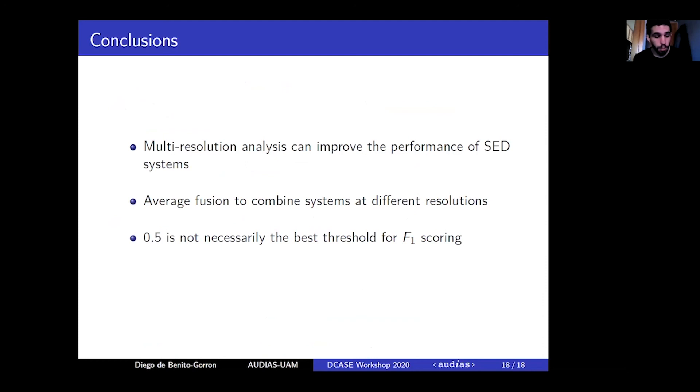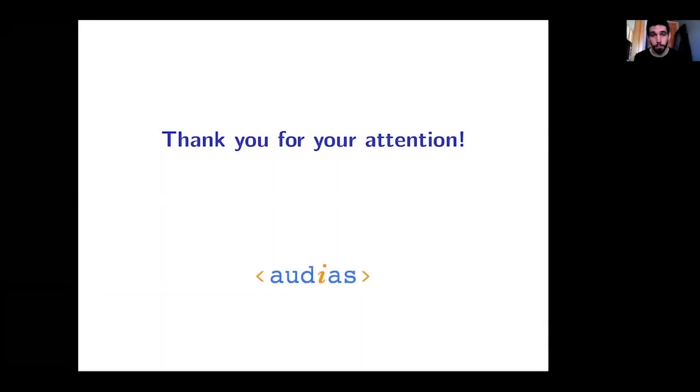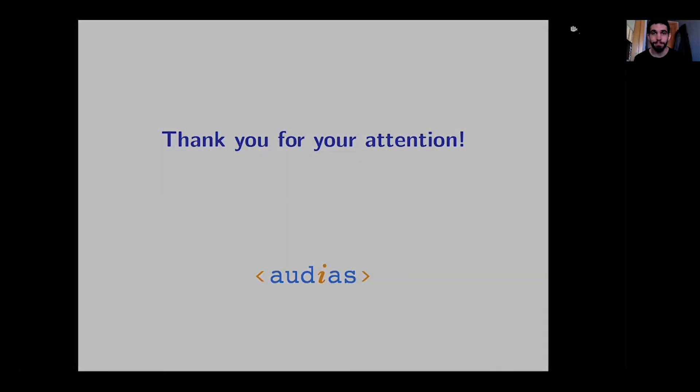As conclusions to this work, we have proven that multi-resolution analysis can improve the performance of sound event detection systems. We were able to combine information of models with different resolutions by means of an average fusion. And finally, we have found that 0.5 is not necessarily the best threshold to compute F1 scores, although it's not clear yet how to achieve a good generalization with class-specific thresholds. Thank you very much for your attention. I'll be glad to address any questions during the Q&A session.